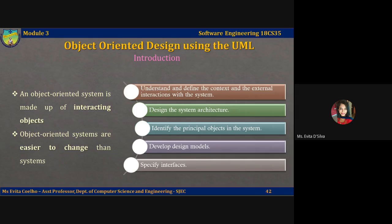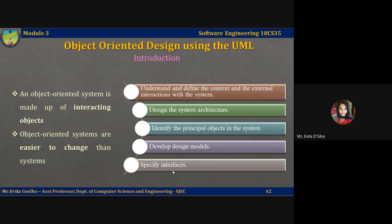To develop a system design from concept to detail in object-oriented design, there are several things you should keep in mind. First, understand and define the context and the external interactions with the system. Second, design the system's architecture. Third, identify the principal objects in the system. Fourth, develop design models. Fifth, specify interfaces. These are the object-oriented design principles that you have to follow.